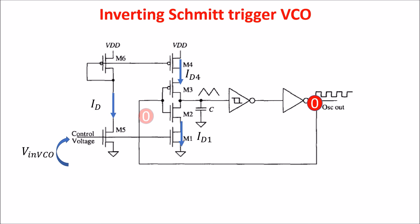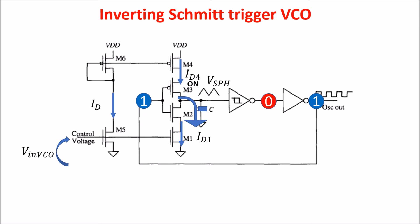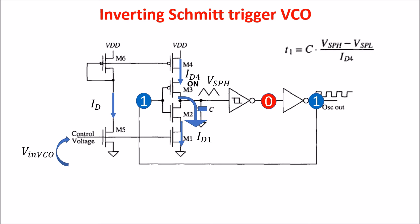Let's assume the output is low. In this case the input of the first inverter is also low, and PMOS M3 is on, so ID4 charges the capacitor. The capacitor keeps charging up to the voltage VSPH, at which level the Schmitt Trigger switches the output from high to low. The time needed for charging the capacitor from VSPL to VSPH depends on ID4, which is the current flowing through M4 and M3, which in turn depends on VNVCO, the input voltage.